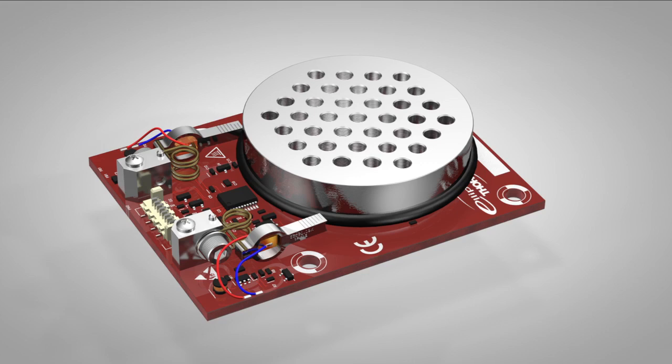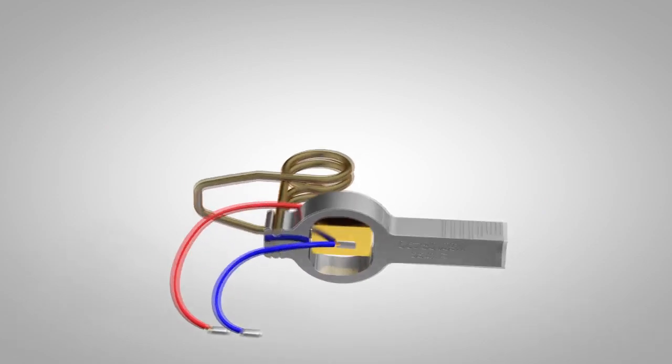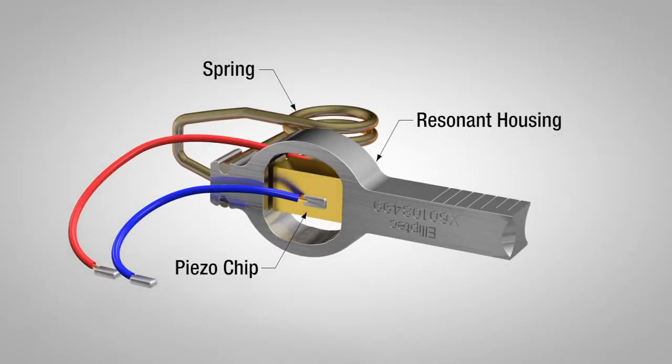In actuality, the two elliptic piezo resonant motors are in plain sight. Each consists of a piezo chip mounted in a resonant housing, with a spring pressing the motor's tip into contact with the plastic track around the edge of the stage.